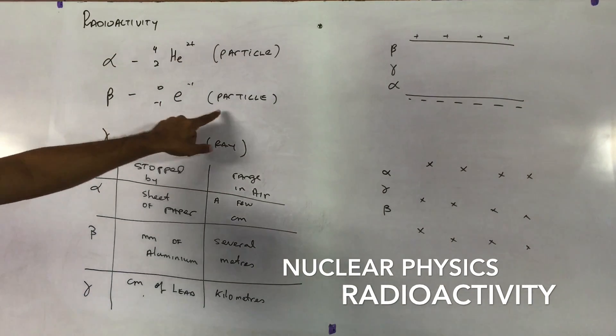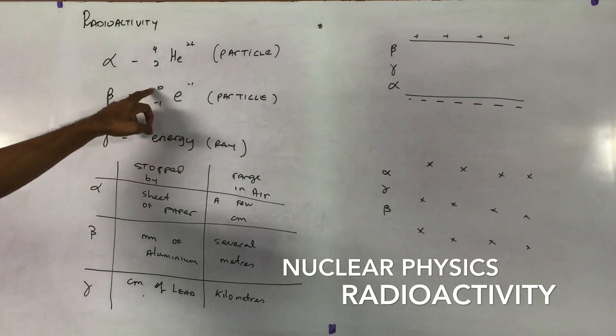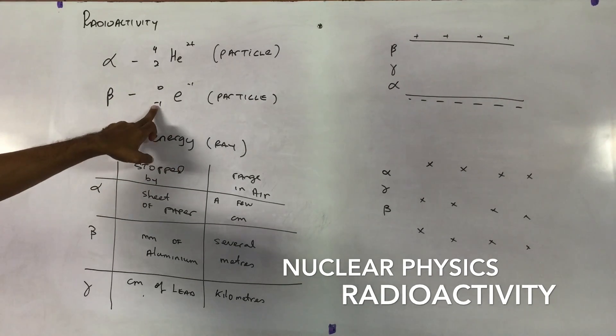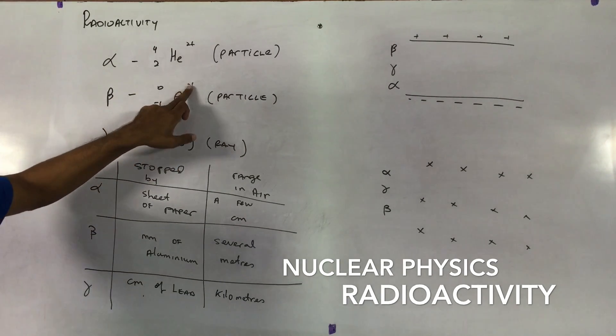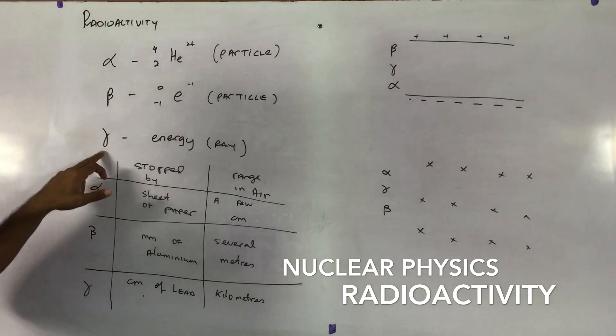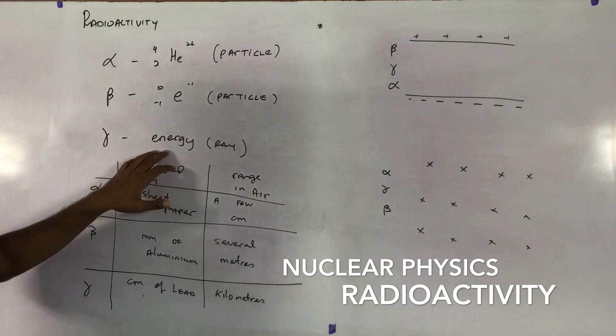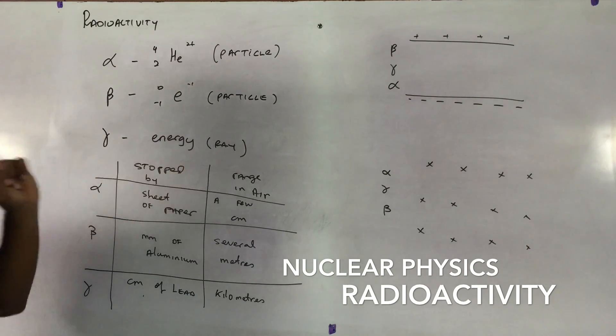Beta particle is what we know as an electron. Basically zero mass, negative one atomic number and a charge of negative one. Gamma is basically energy. It's not a particle, it's just energy.